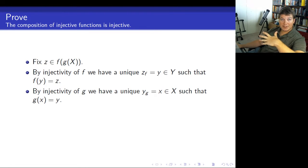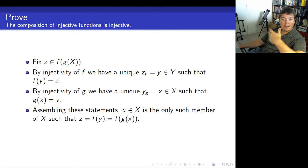And now what we're going to do is we're going to just link these together. So, we're going to say there's an x in x, which is the only member of x, such that z is equal to f of y is equal to f of g of x. Notice, z is equal to f of y comes from the first one, and y is equal to g of x comes from the second one. So, what we've just shown is z has a unique preimage under the composition function. So, we're done.